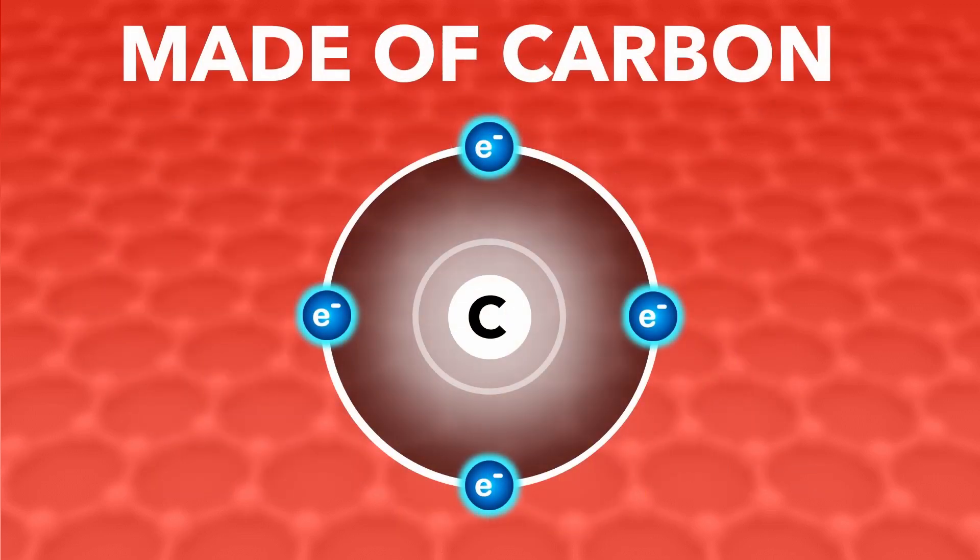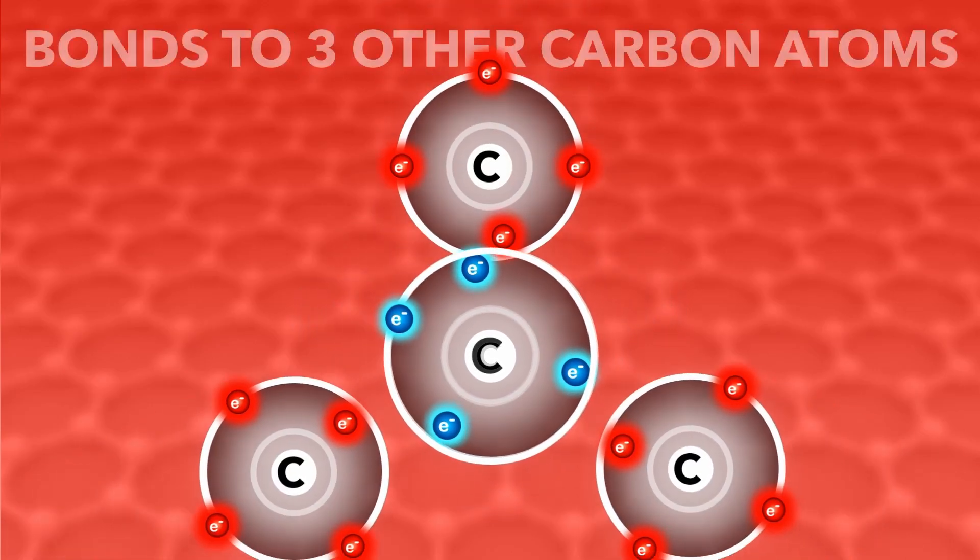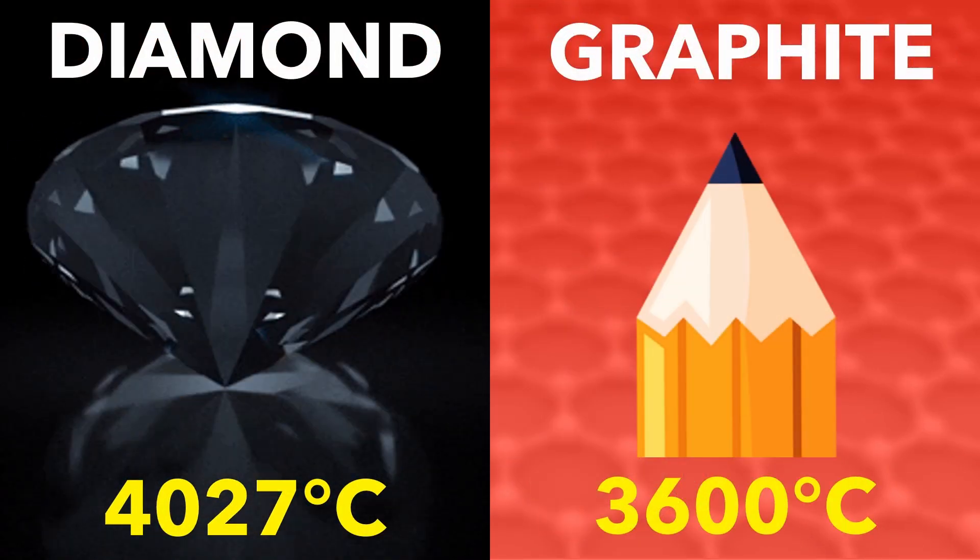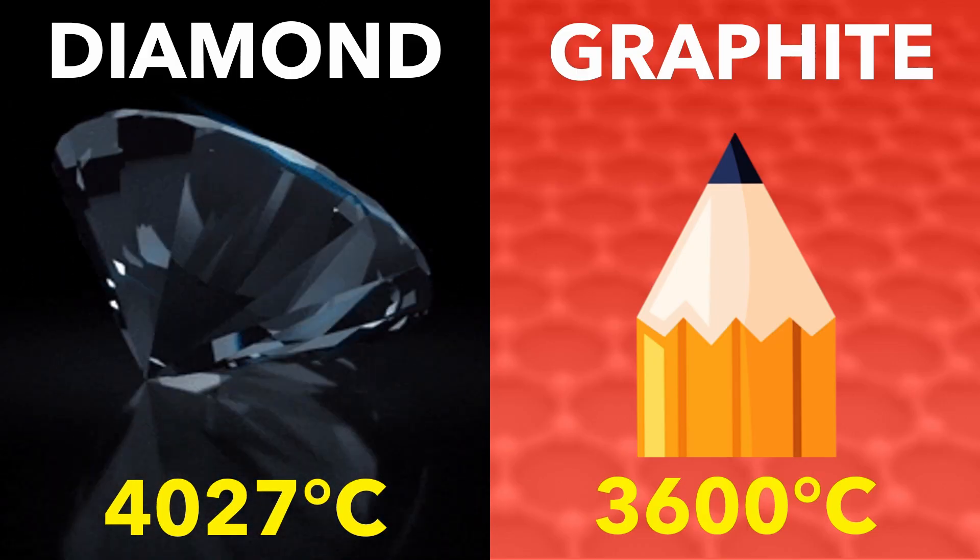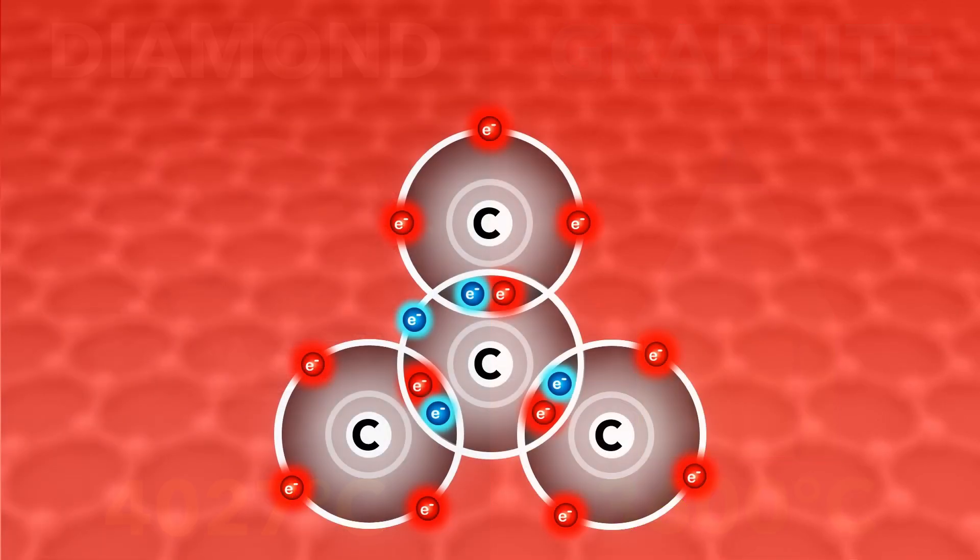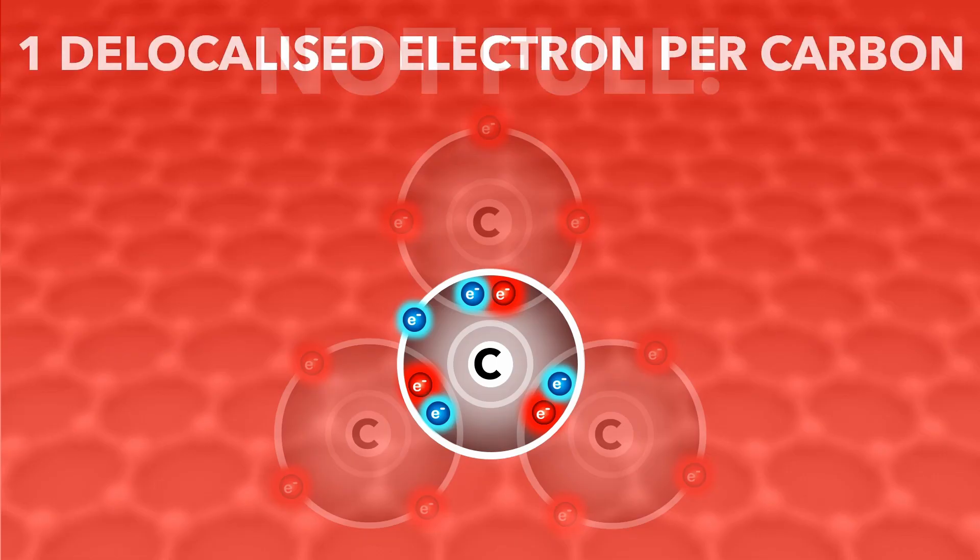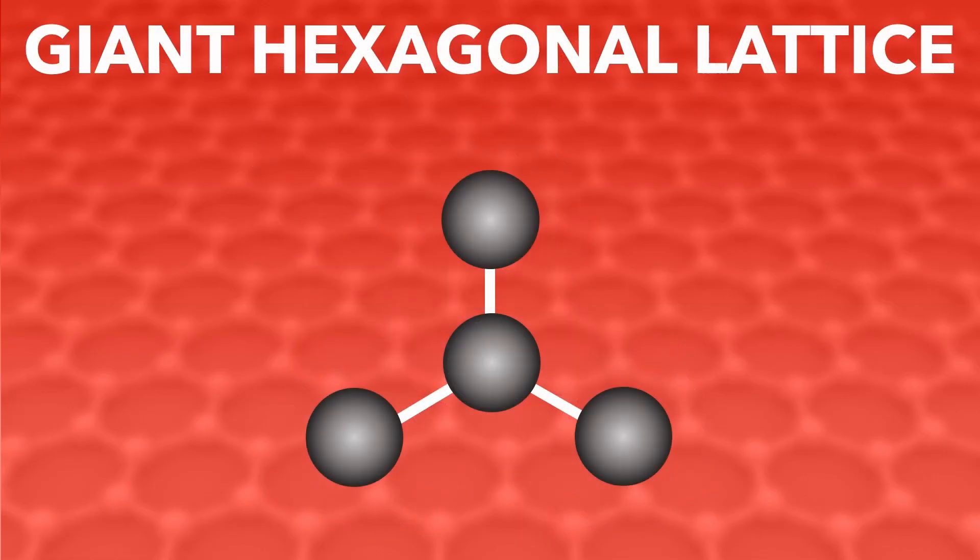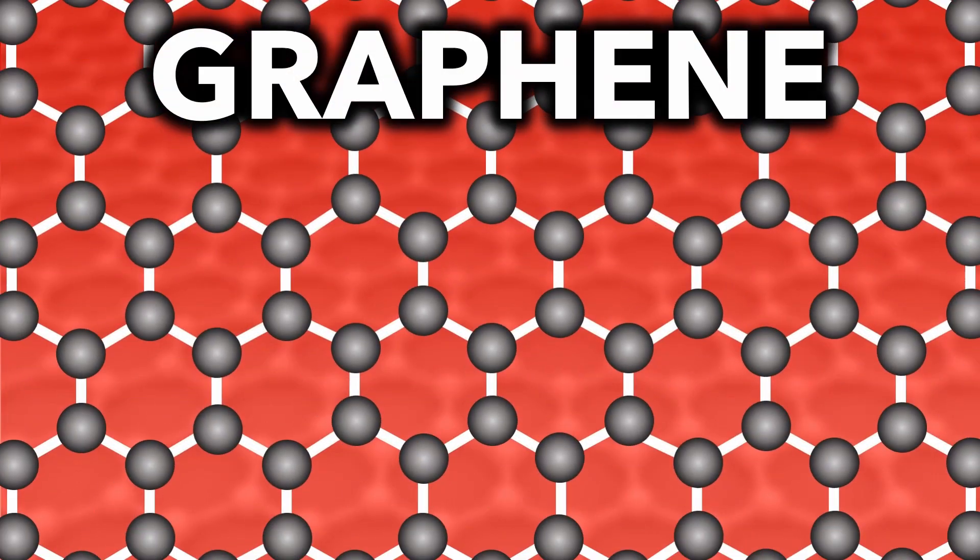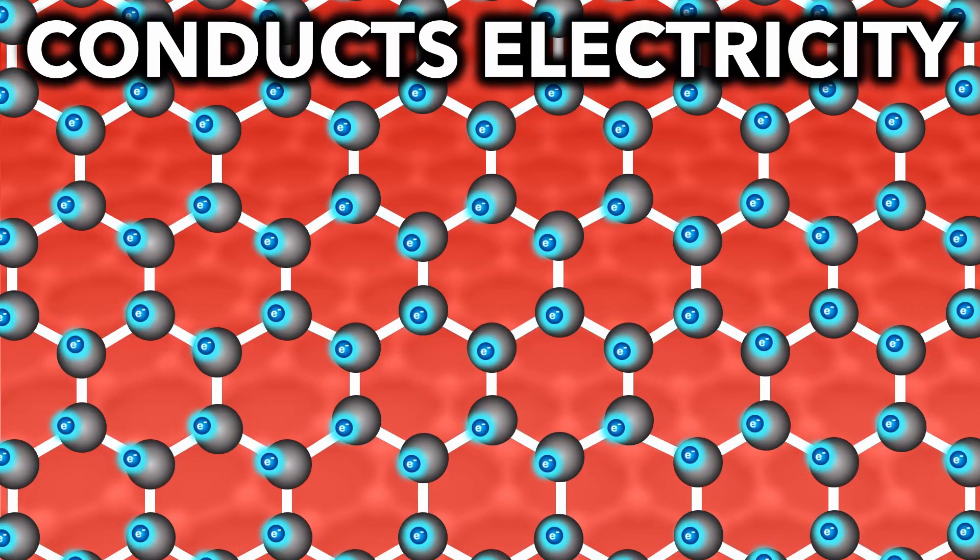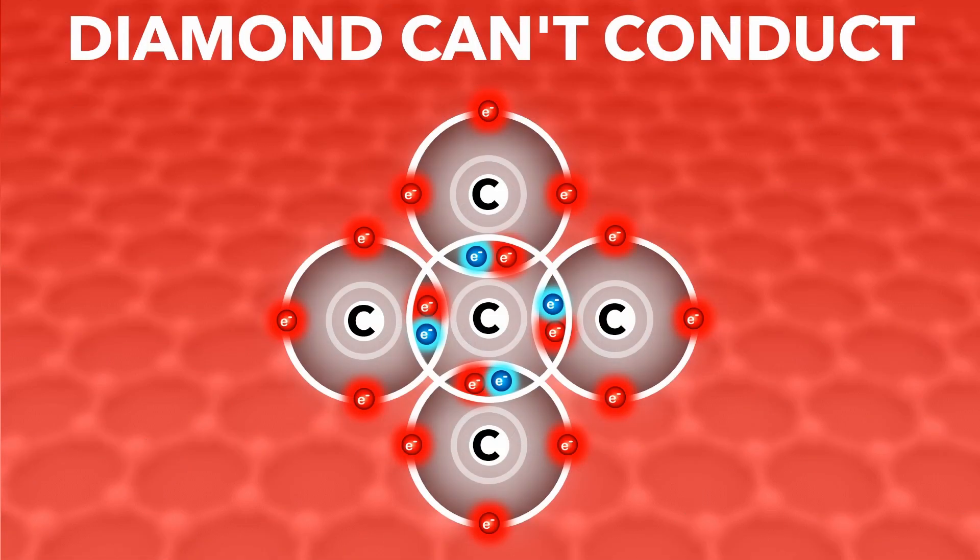A second giant covalent compound is graphite. Like diamond, it's also made of just carbon, but this time each carbon only bonds to three others. Three bonds instead of four gives graphite a slightly lower melting point than diamond. But each carbon only has seven electrons in its outer shell, leaving one spare or delocalised electron per carbon atom. The structure is a thin honeycomb-like sheet called graphene. The spare electrons allow graphene to conduct electricity, unlike diamond, which uses all of its outer electrons for bonding.